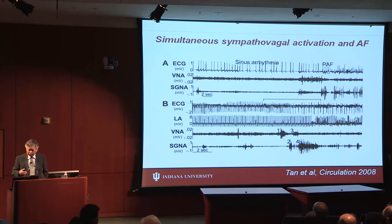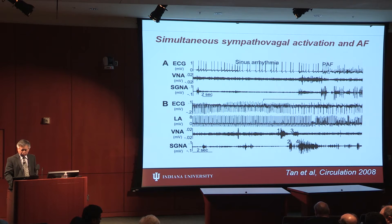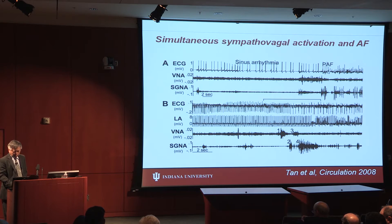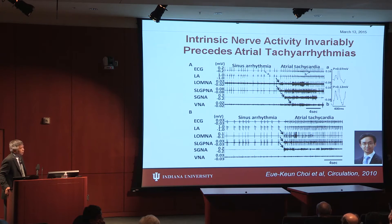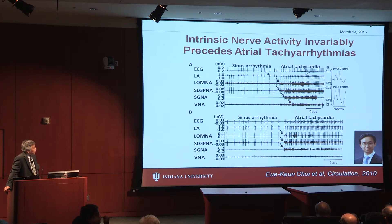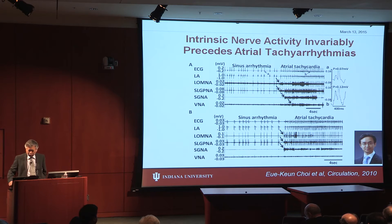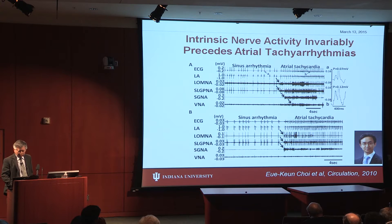We discovered that with spontaneous onset of atrial arrhythmia such as paroxysmal atrial fibrillation, simultaneous discharges from the stellate ganglion and vagal nerve appear to be the triggering factor of PAF. Simultaneous discharge of stellate ganglion and vagal nerve activity also seems to convert atrial tachycardia into atrial fibrillation. Looking carefully at intrinsic cardiac nerve activity, we showed that intrinsic nerve and ligular nerve activity actually precedes superior left GP nerve activity, which precedes external nerve activity — associated with atrial tachycardia.